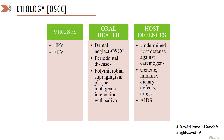Poor oral health has also been found to show an association with oral squamous cell carcinoma. Poor oral health leads to deterioration of the periodontal condition, and the polymicrobial supragingival plaque causes a mutagenic interaction with the saliva, resulting in damage to the oral epithelial cells. The immune status of an individual is also known to be associated with development of oral squamous cell carcinoma — people with reduced immune status or immunocompromised states are at risk of developing oral cancers.